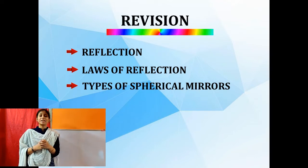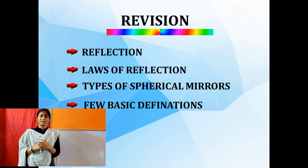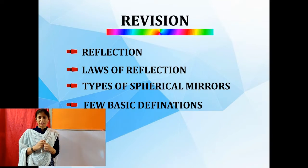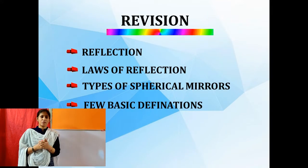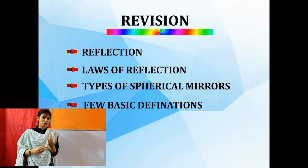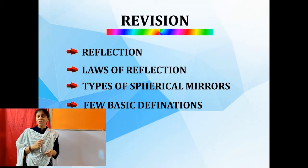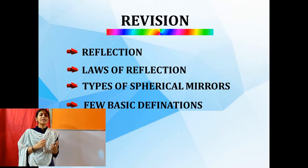The next thing we discussed in the previous session was types of spherical mirrors. There are two types: concave mirror and convex mirror. In a concave mirror, the outer surface is coated and the inner surface is reflecting. Then we discussed basic definitions like the pole (P), focal length (f), principal focus (F), radius of curvature, center of curvature, and the definition of image.